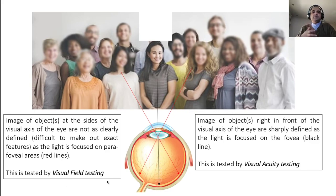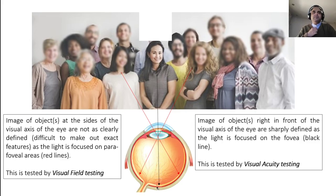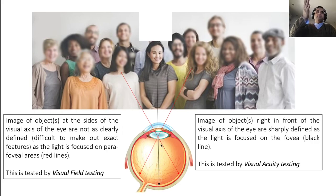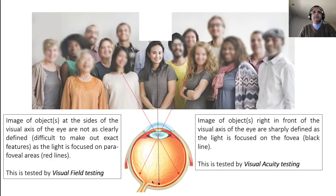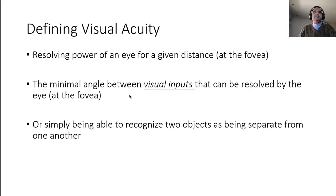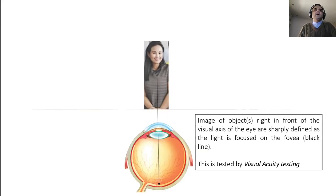Go over the refractive error discussion — it will make this easier to understand. Visual acuity is a function of the fovea. All these definitions — resolving power of the eye, the minimum angle between two visual inputs, being able to recognize two objects as separate — are basically testing the fovea.